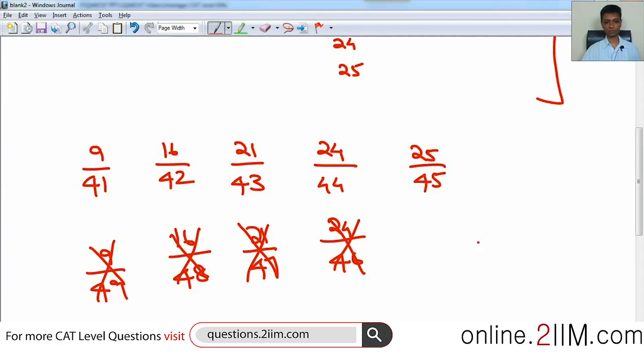9 by 41, 16 by 42—the numerator is popping up, but the denominator goes up only by one. This is definitely smaller. 16 to 21, 42 to 43—definitely smaller. 21 goes up to 24—this goes up by 3, this goes up by only 1. This goes up by 3 on a smaller base. This goes up by 1, this goes up by 1, this goes up by 1 on a smaller base. So definitely, this is larger than this. 24 by 44 is smaller. The highest is 25 by 45.